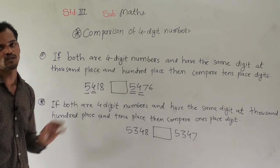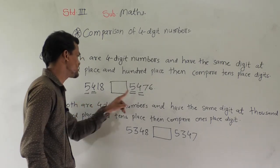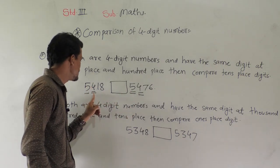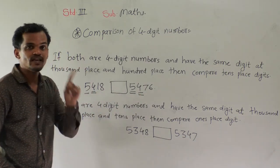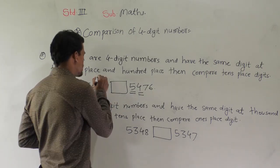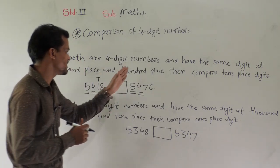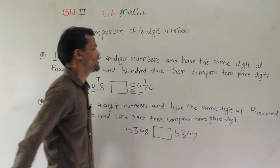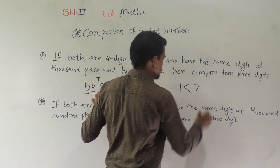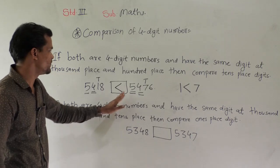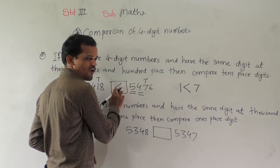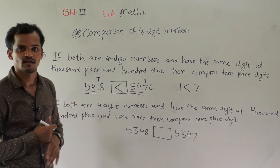In both numbers, the thousands digit is 5 and 5, and at hundreds place here 4 and here also 4. So we have to compare the tens digit. In 5418, 1 is at the tens place; in 5476, 7 is at the tens place. We know that 1 is smaller than 7, means 7 is greater than 1, so we will use this sign — the open side of the symbol should be at the greater number.